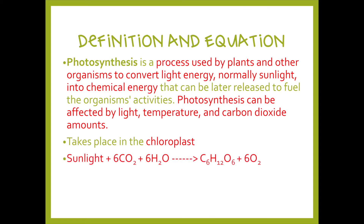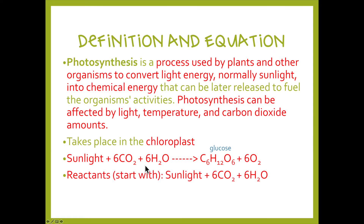Here is the equation for photosynthesis. Looking at this equation, we start with sunlight, carbon dioxide, and water — plants need all three of these things to complete photosynthesis. Their goal is to create glucose, which is C6H12O6, and in the process they release oxygen. These inputs — sunlight, carbon dioxide, and water — are our reactants. We end with our products, which are glucose and oxygen.